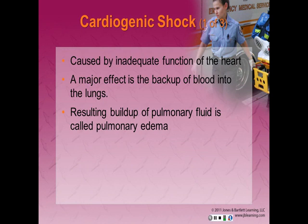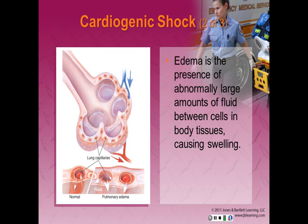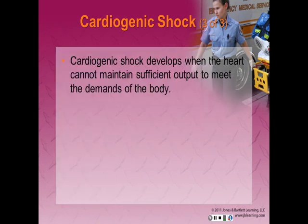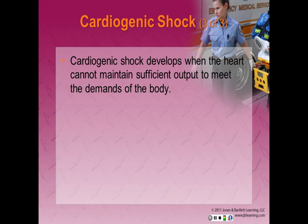Cardiogenic shock is caused by inadequate function of the heart or pump failure. A major effect is the backup of blood into the lungs and the resulting buildup of pulmonary fluid — pulmonary edema. Edema is the presence of abnormally large amounts of fluid between cells in body tissues, causing swelling of the affected area, and pulmonary edema will then lead to impaired ventilation. Cardiogenic shock develops when the heart cannot maintain sufficient output to meet the demands of the body. Cardiac output depends on myocardial contractility, adequate blood supply to the heart, and appropriate resistance to flow in the peripheral circulation.